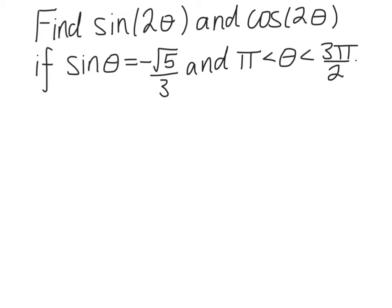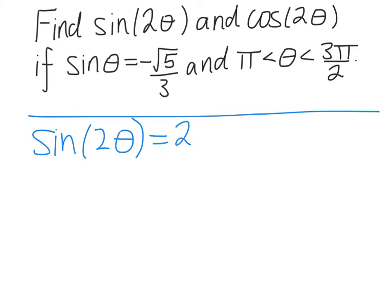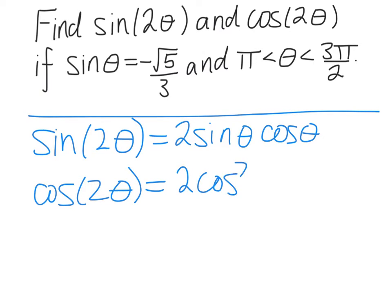And to do this, I'm going to use the double angle formulas, which tell us that sin(2θ) is 2sinθcosθ, and cos(2θ) is 2cos²θ minus 1.